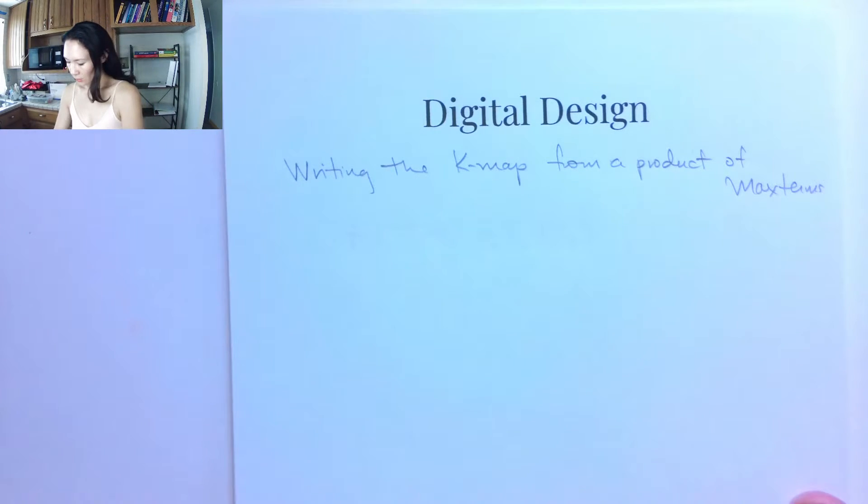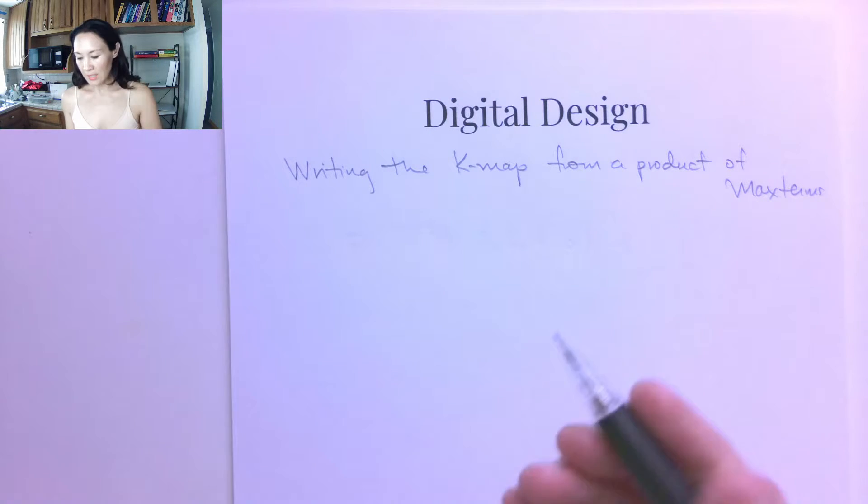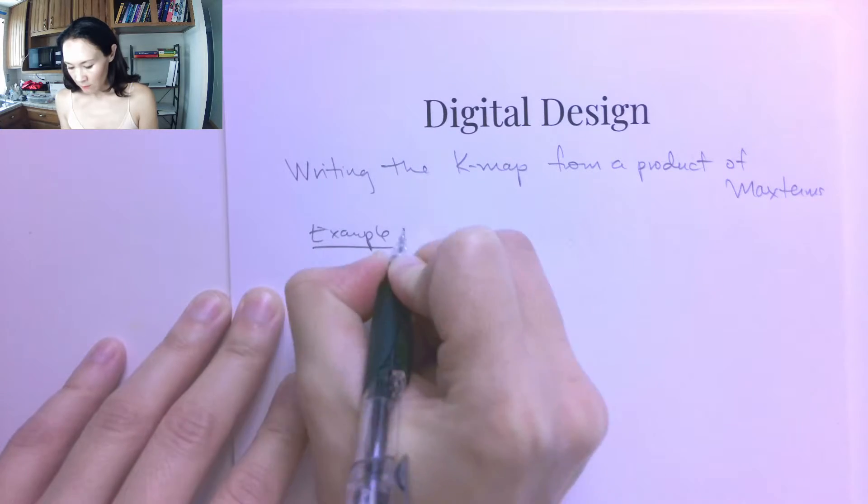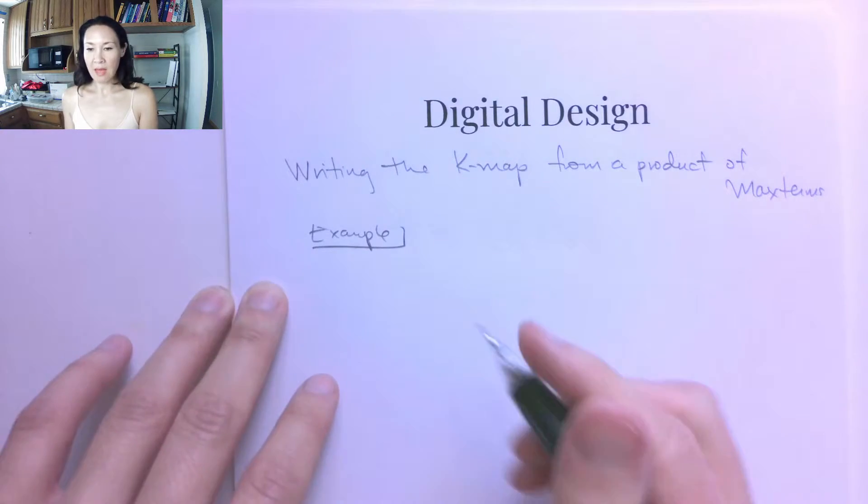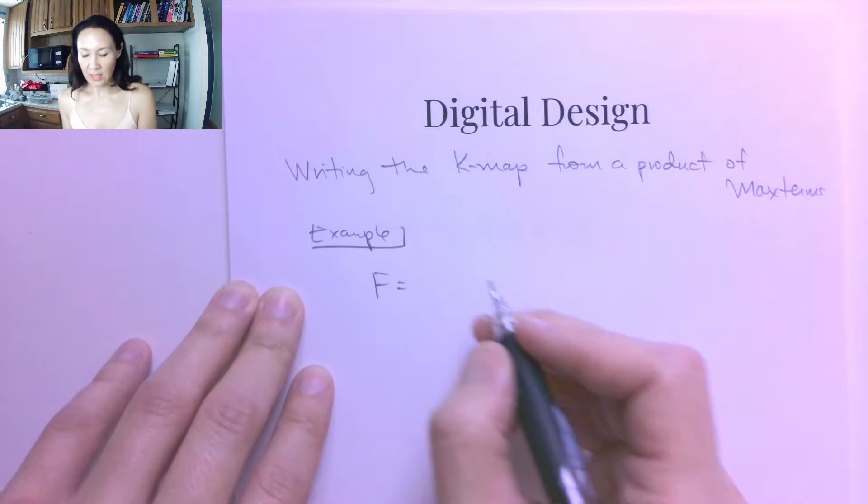In the last video, we constructed a three-input K-map from a sum of products in min-term notation. So this time, let's do an example of making a three-input K-map, but this time suppose our function is given in max-term notation.